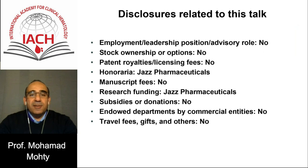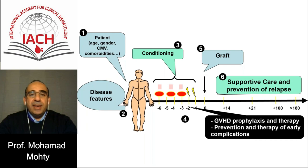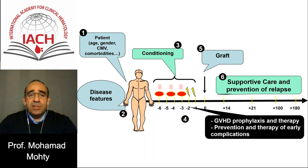These are my disclosures relevant to this webinar. The allogeneic stem cell transplant procedure is a relatively complex procedure where you have to take into account several parameters in order to improve patient outcome. Obviously, patient characteristics like age, gender, CMV serostatus, and comorbidities are going to play a role. Disease features, disease status, but also prior therapy before transplant is going to impact the final outcome. When we look into the transplant procedure itself, the choice of the conditioning regimen is a crucial step, but also the stem cell source and the choice of the donor.